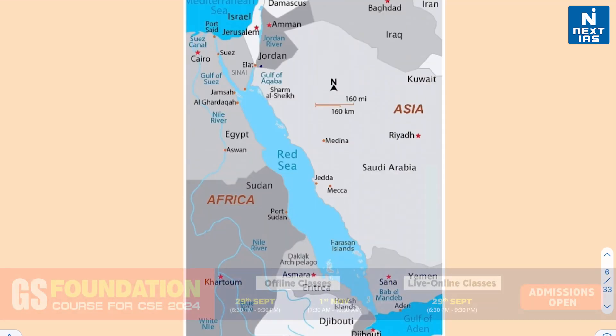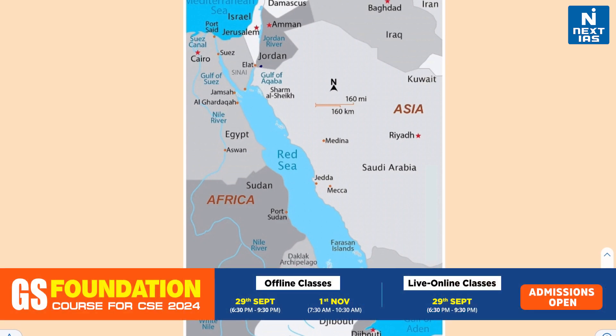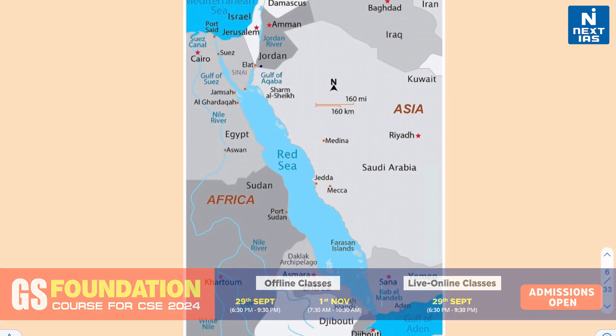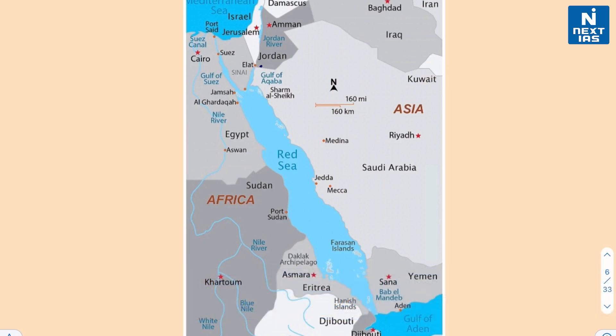Let us see the countries that border the Red Sea. On the eastern shore, we have Saudi Arabia and Yemen. On the western front, we have Egypt, then Sudan, we have Eritrea, and this is Djibouti.